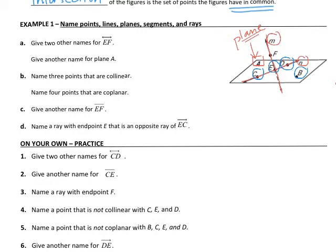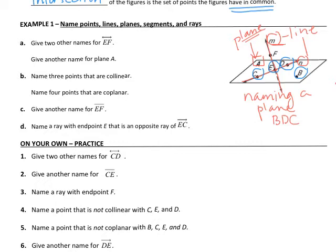Another way that we can name a plane is with three capital letters. So for this example, we could call this plane BDC, because points B, D, and C also lie on the plane. Line M looks like it's sticking out of the plane — line M is piercing through plane A at point E. So point E is an intersection point of line M and plane A. It's also the intersection of lines N and M, where those lines share a point in common — that's what we call a point of intersection.